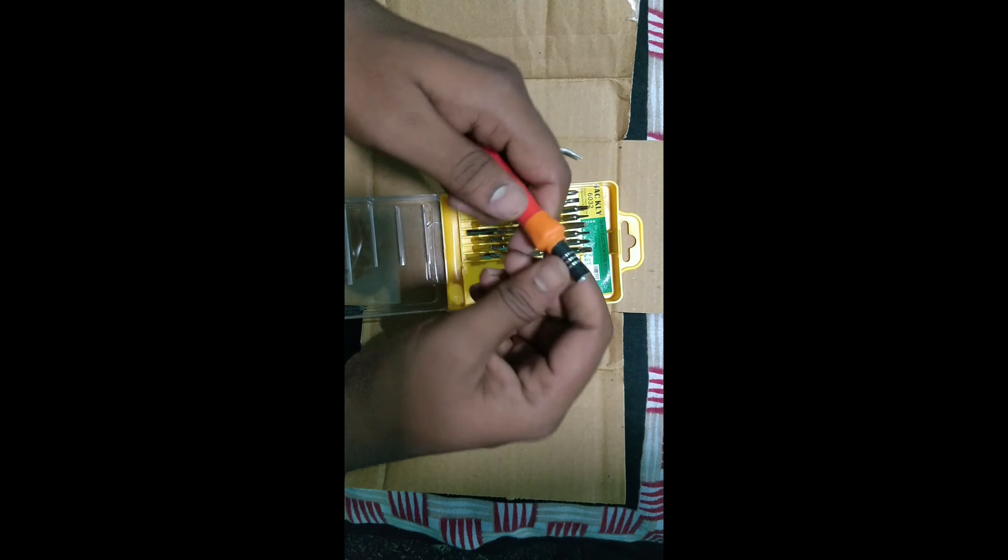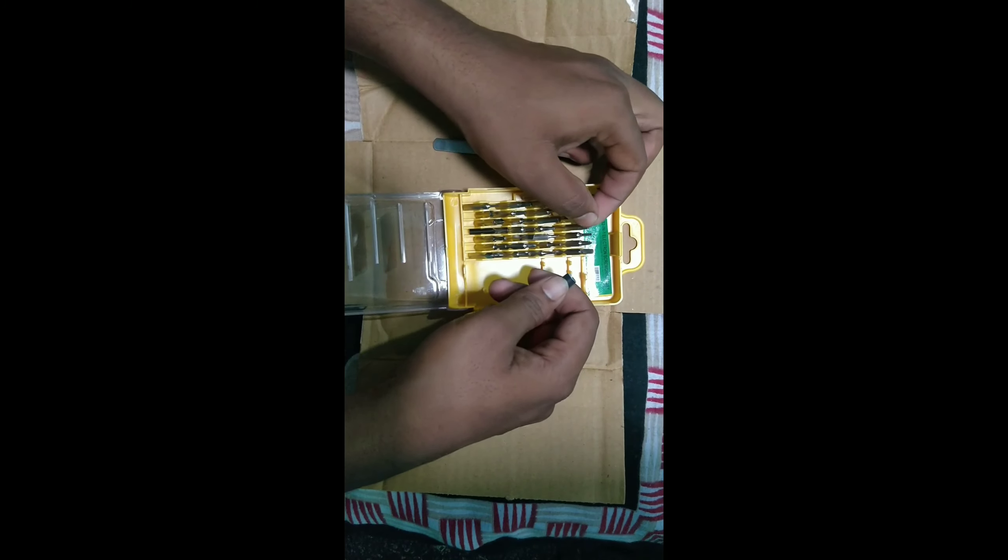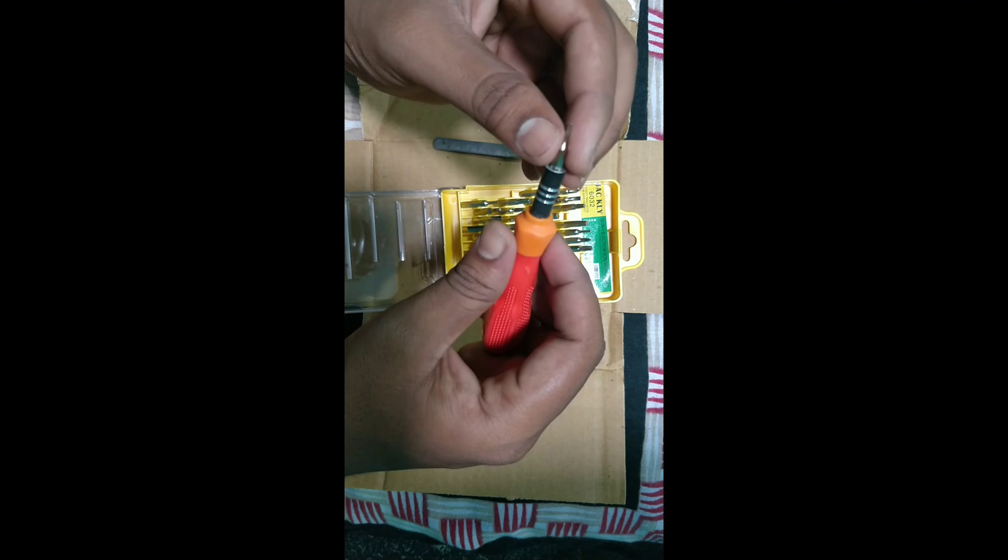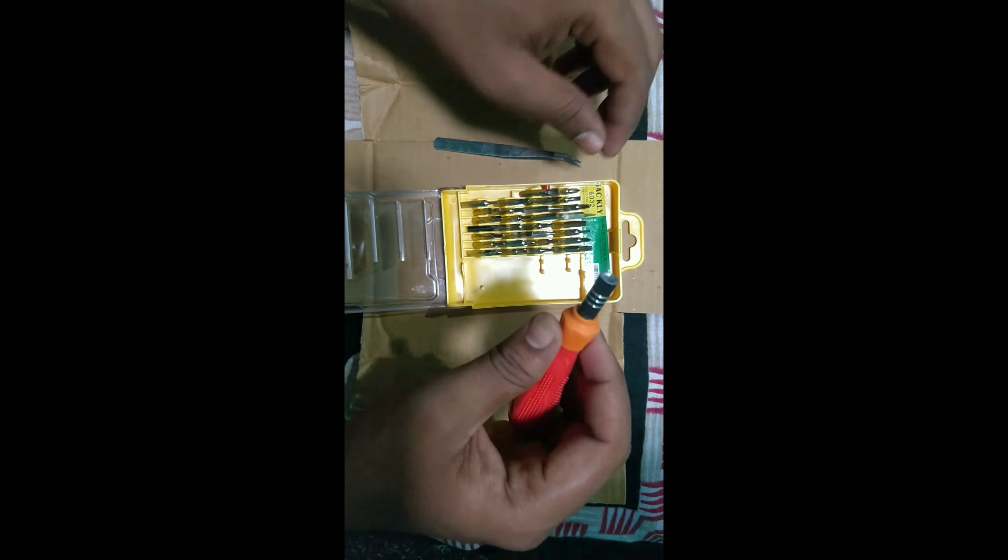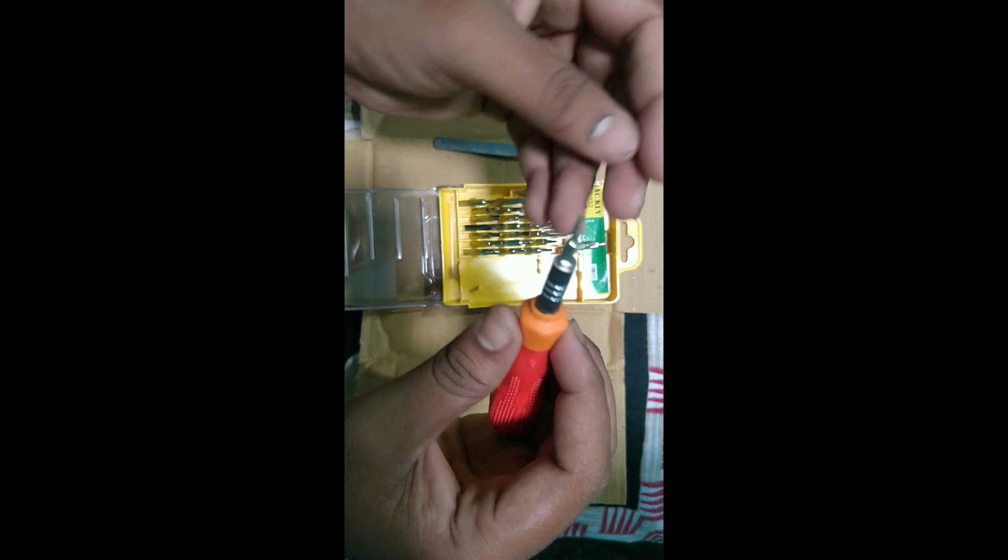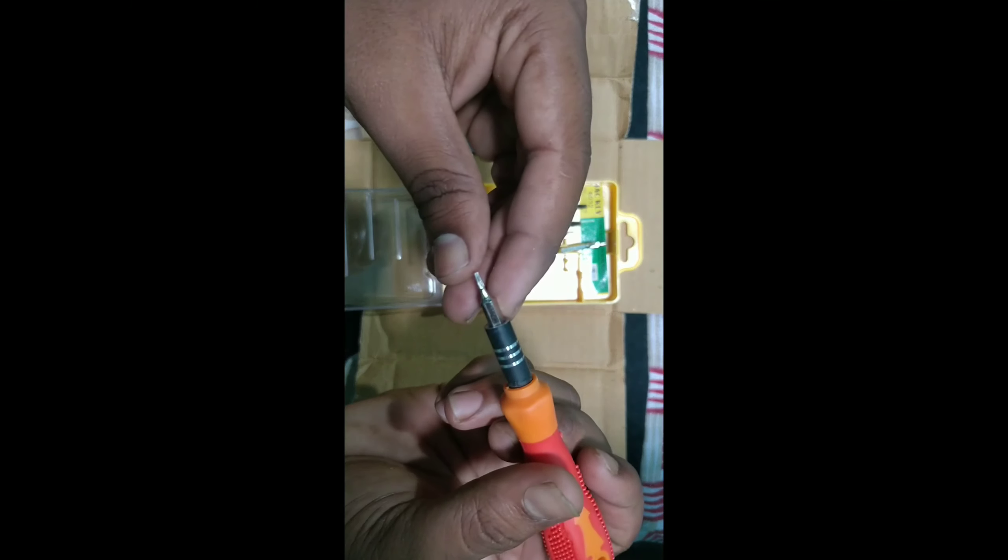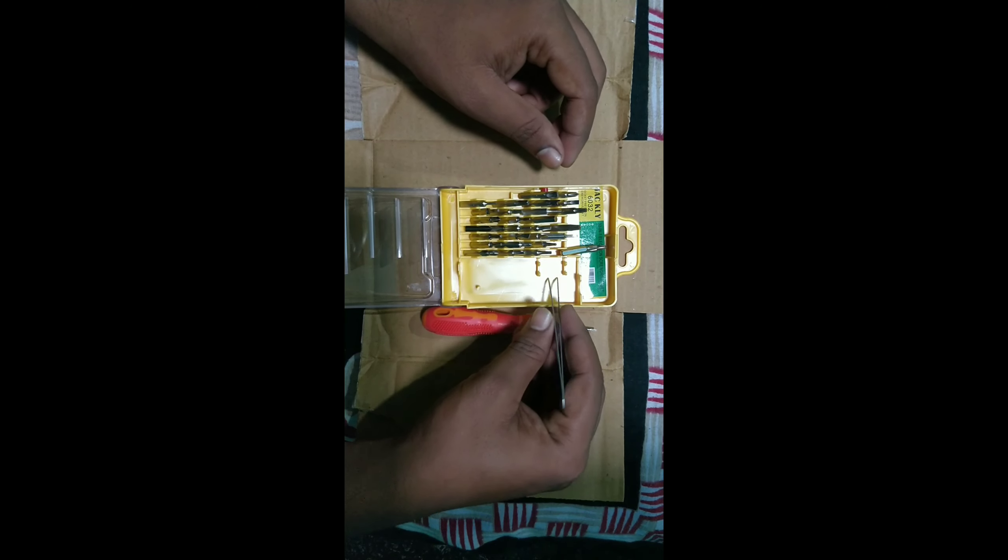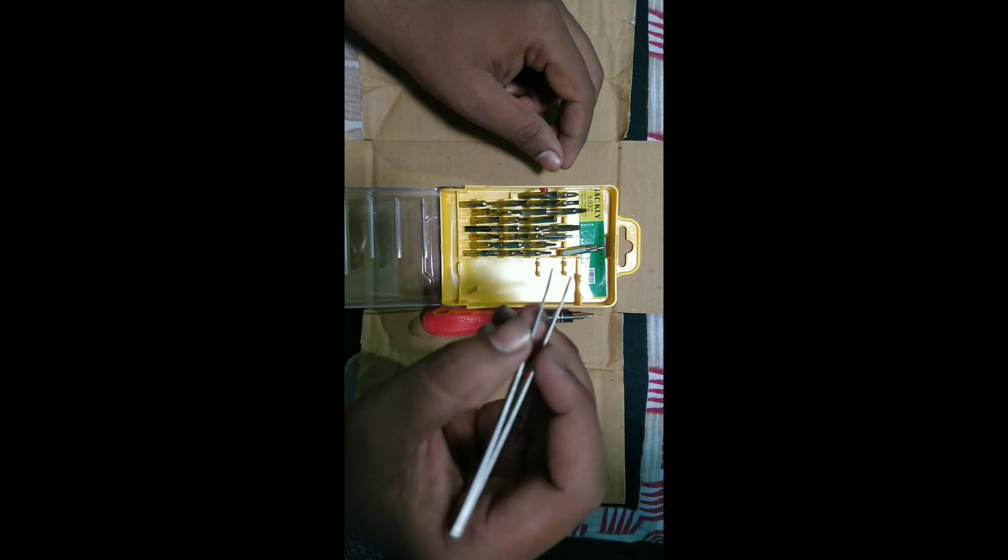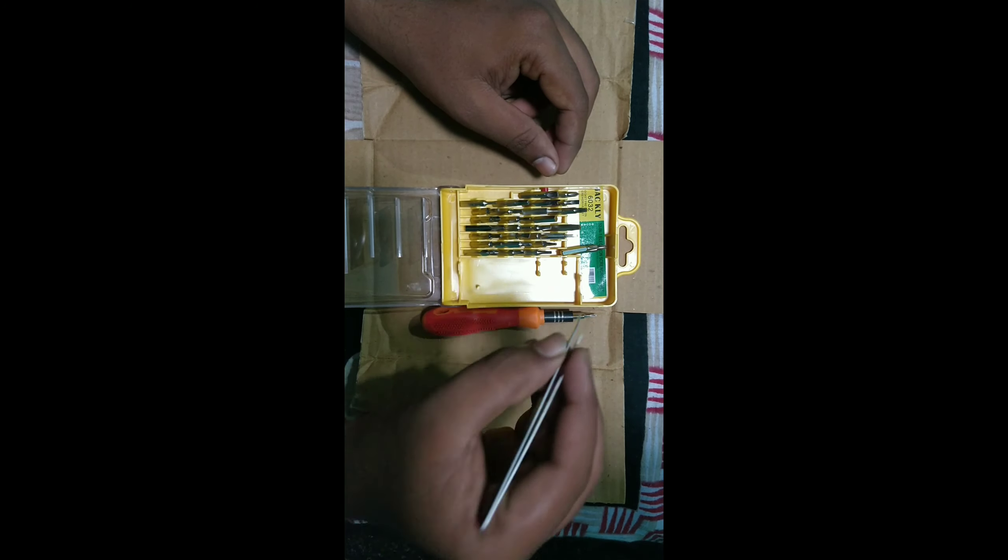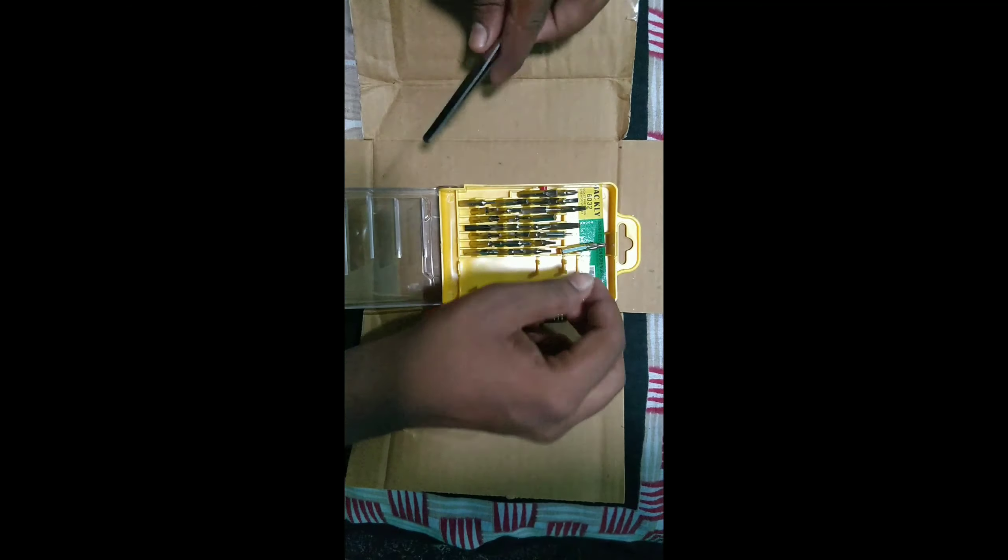This is the screwdriver holder made of rubber material. It has magnetic tips - the screwdriver is magnetic. Let me show you how it opens and you can pack it easily.